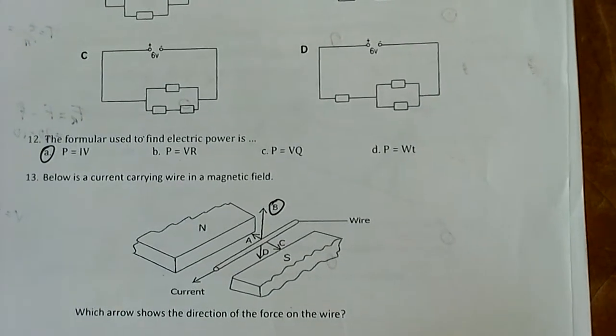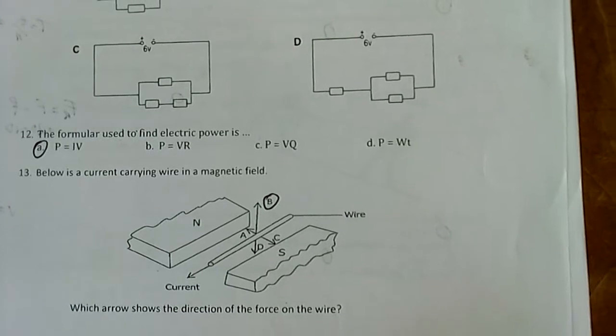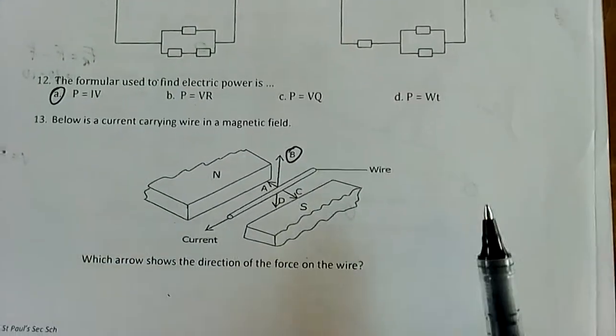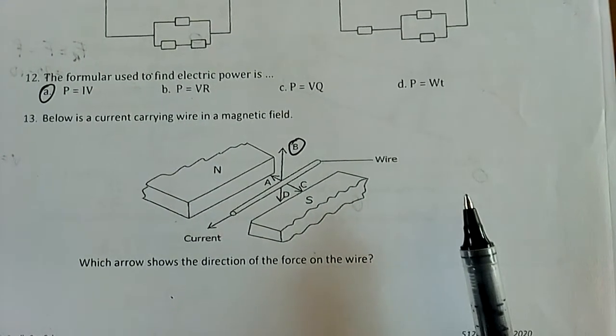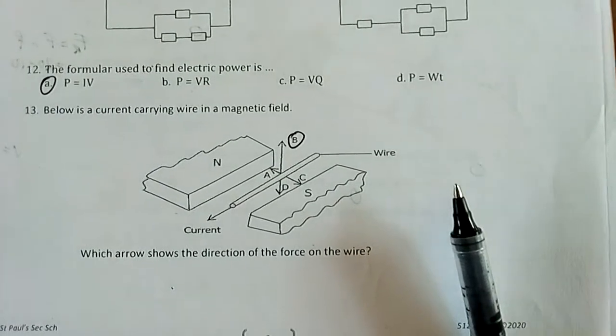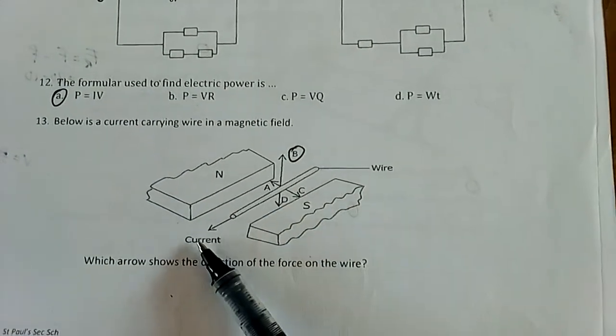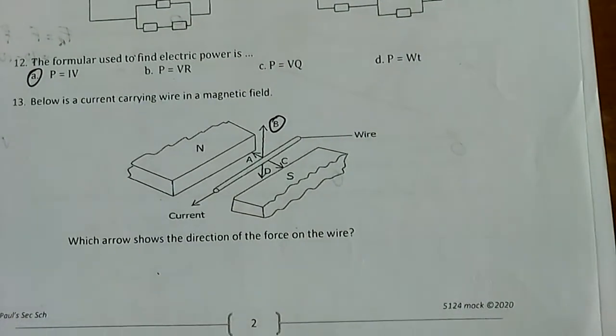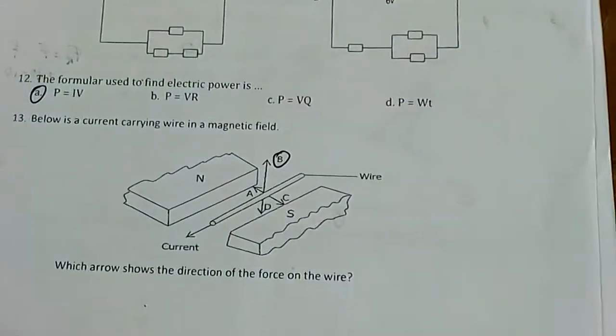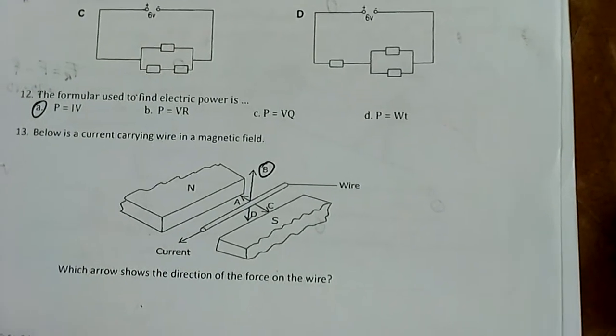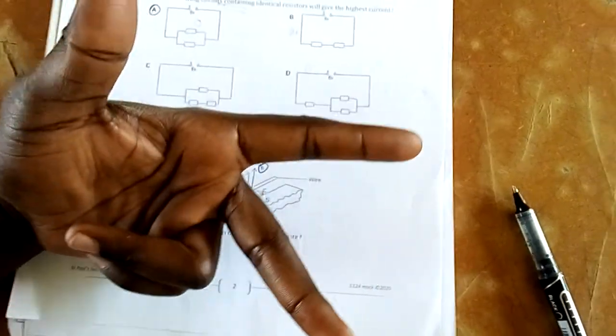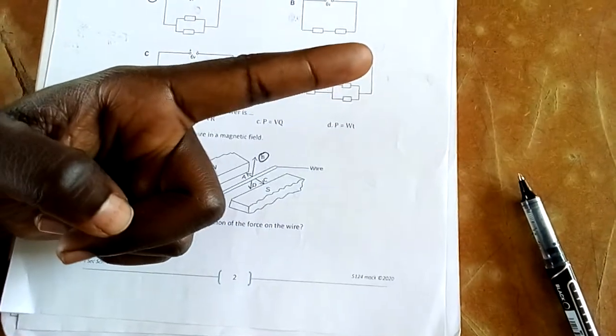Number 12: The formula used to find electric power is: Power equals V times I. That's the formula, so the answer is A. Number 13: The figure below is a current-carrying wire in a magnetic field. Which arrows show the direction of force on the wire? This is about the motor effect. We can only determine the direction of force by using Fleming's left-hand rule or the motor rule.